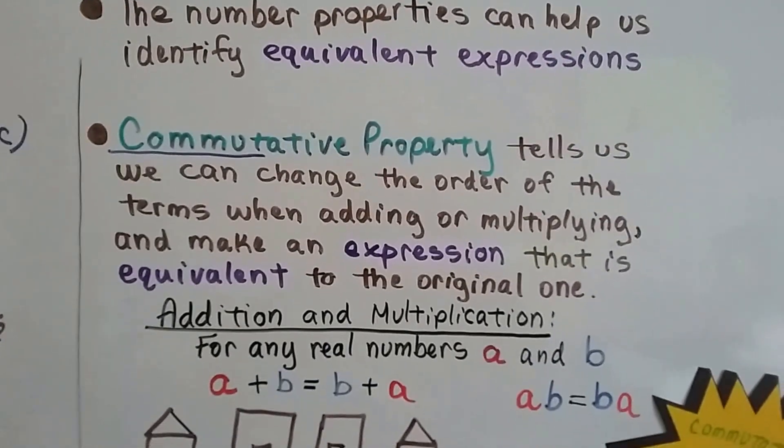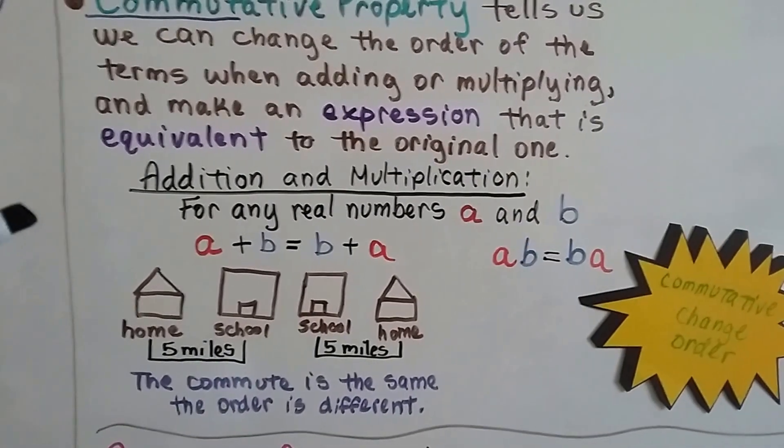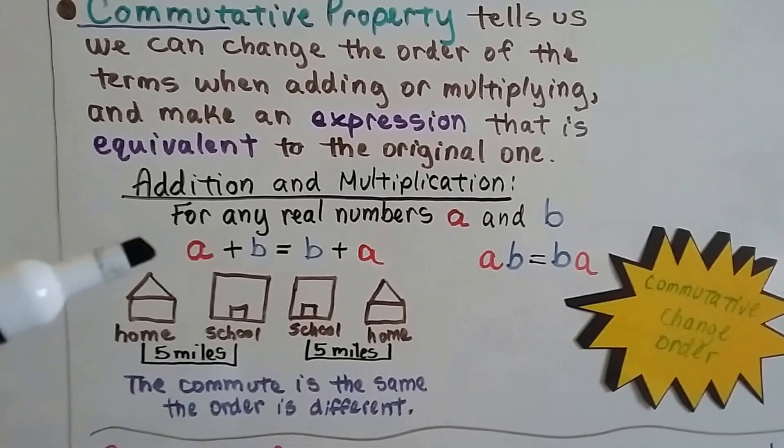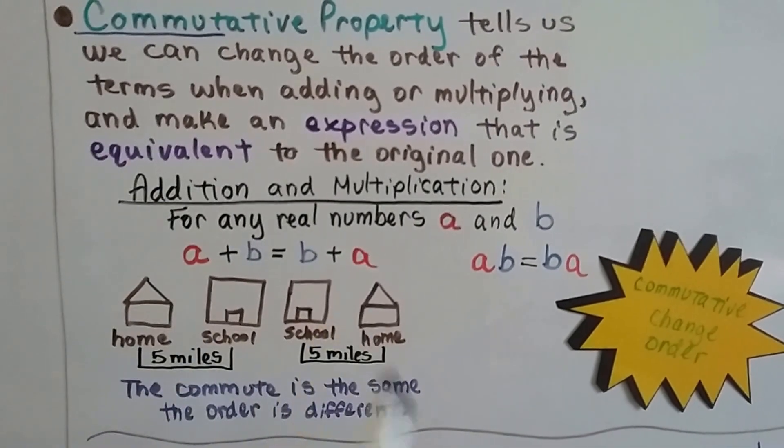And we can make an expression that's equivalent to the original one. So for addition and multiplication, for any real numbers a and b, a plus b equals b plus a. See how we switch the order? The a was in front, now it's in back.